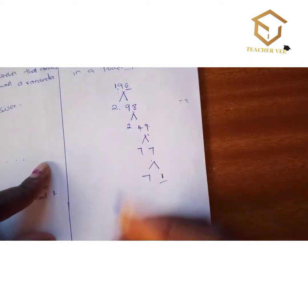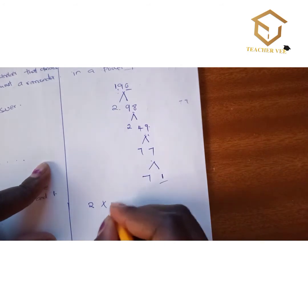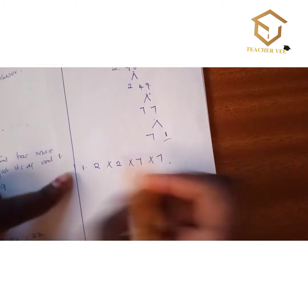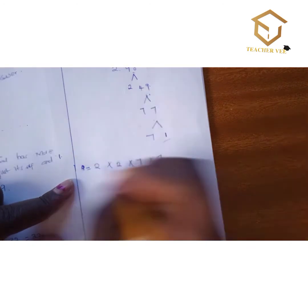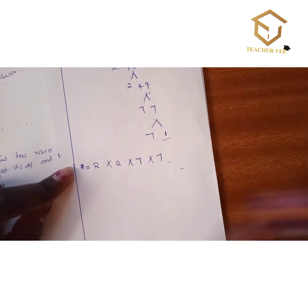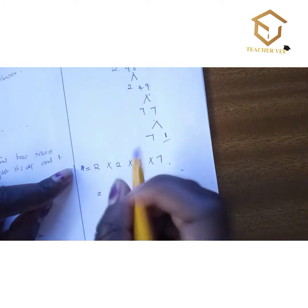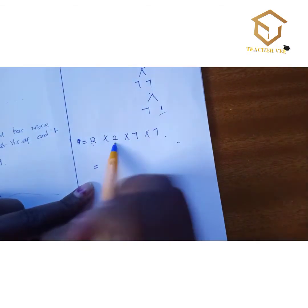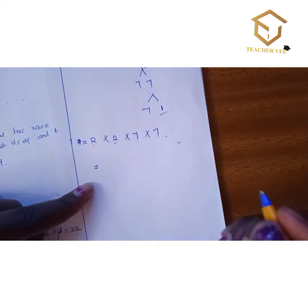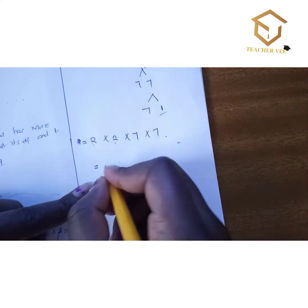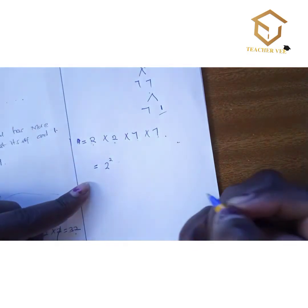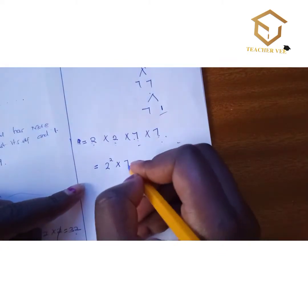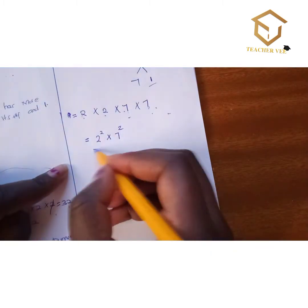So we express 196 as a product of its prime factors: 2 × 2 × 7 × 7. The second answer, in power form, is 2² × 7².